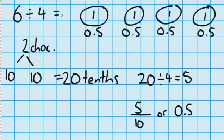So 6 divided by 4 is 1.5 and you might know that 0.5 is also the same as a half so I could say that everyone got 1 and a half chocolate bars.